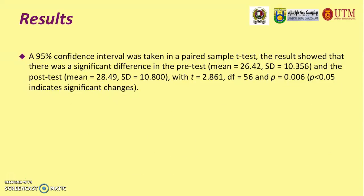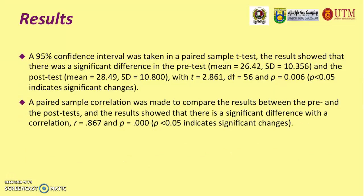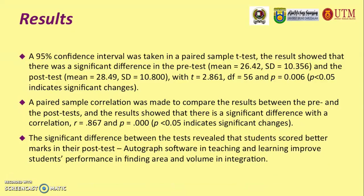When a 95% confidence interval was applied in a paired sample t-test, the results showed a significant difference: the pre-test had a mean of 26.42 and standard deviation of 10.356, while the post-test had a mean of 28.49 and standard deviation of 10.800. A paired sample correlation was also made to compare the pre- and post-test results, showing a significant correlation of 0.867. The significant difference between the tests revealed that students scored better marks in their post-tests, implying that Autograph software in teaching and learning improves students' performance in finding area and volume in integration.